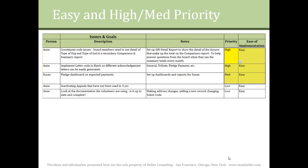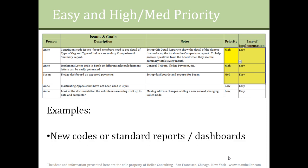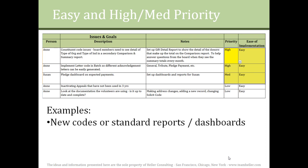The easy high-priority and easy medium-priority items are probably going to be the first to take care of, and you probably have the skills in-house to tackle them. The easy high-priority items especially are likely to be low-hanging fruit that will provide some quick wins for your team. Some examples might be setting up new campaigns and appeals for the new major gifts initiative, or setting up dashboards for the development officers.